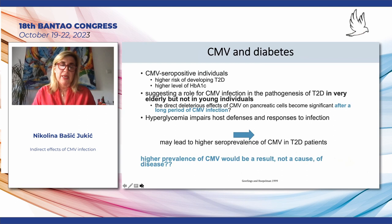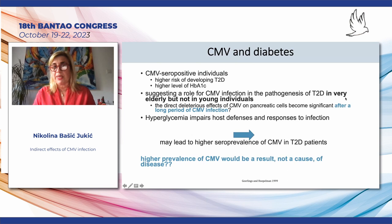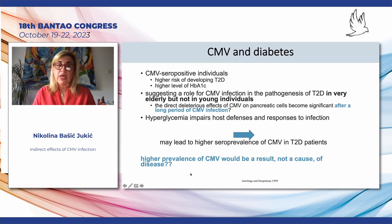CMV is also implicated in diabetes. CMV seropositive individuals have a higher risk of developing type 2 diabetes and have higher levels of glycated hemoglobin, suggesting a role for CMV infection in the pathogenesis of type 2 diabetes in very elderly but not in young individuals. Scientists suppose that the direct negative effects of CMV on pancreatic cells become significant only after a long period of CMV infection.